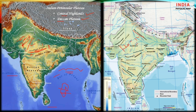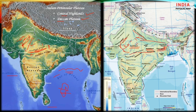The eastward extension of this plateau is locally known as Bundelkhand and Baghelkhand. Further east is the Chota Nagpur Plateau, which is drained by the Damodar River. So the Central Highlands extend from the Aravalli Range and Vindhya Range all the way to the Rajmahal Hills in the east.